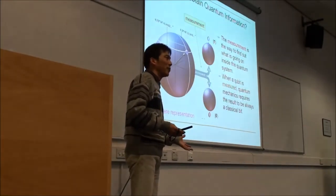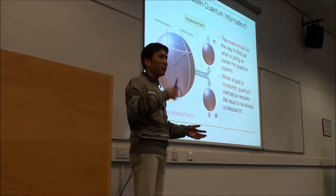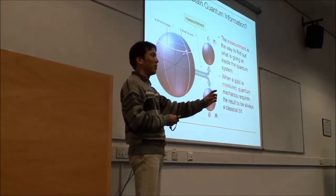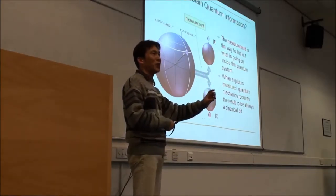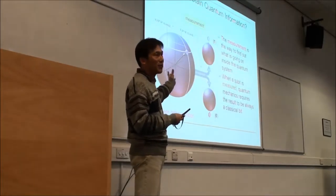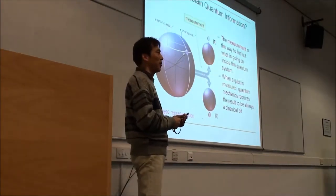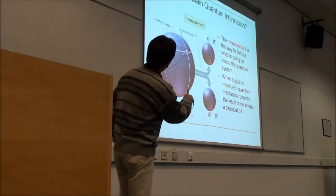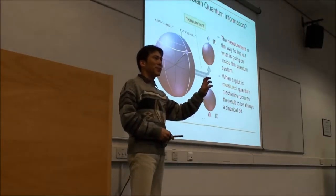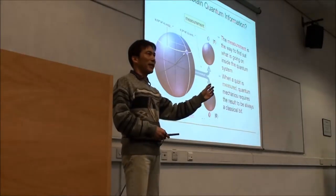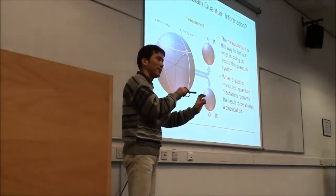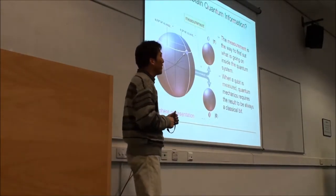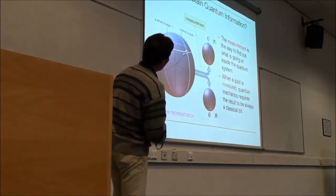It looks very fantastic — enormous amounts of classical information can be stored into one single qubit. But the problem here is observation. Because the quantum state is so tiny, we have to look at it to get the information stored inside the quantum bit. That is called measurement.